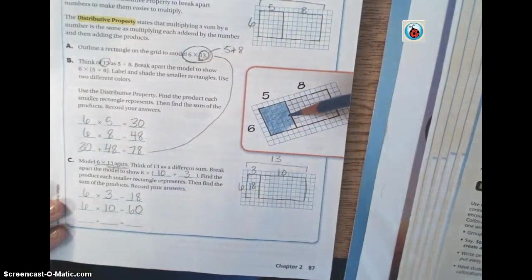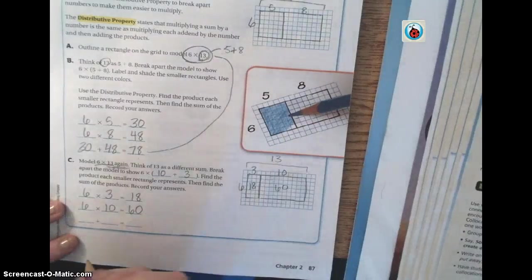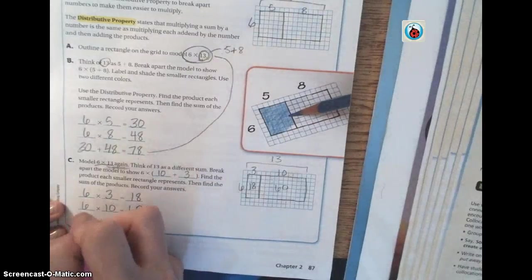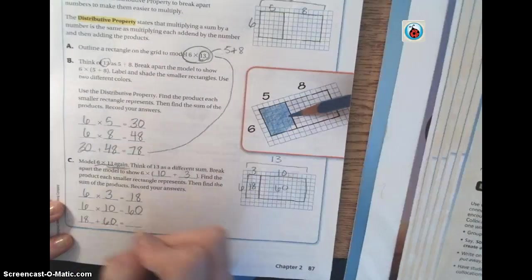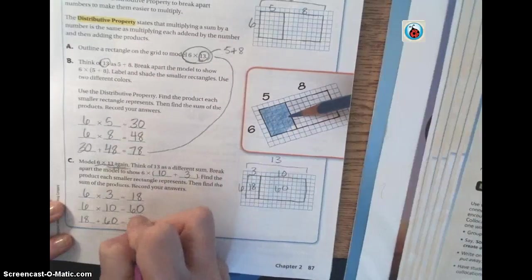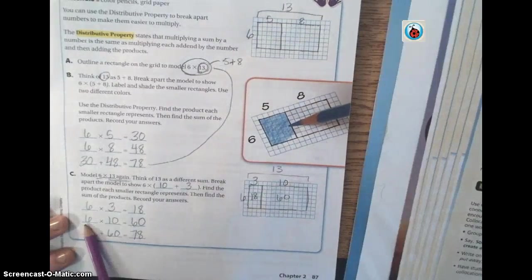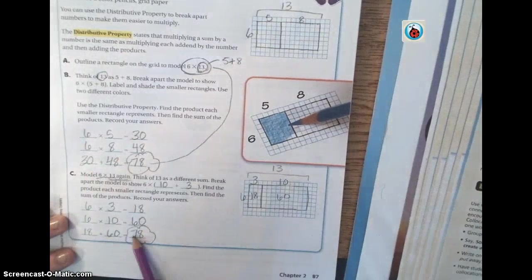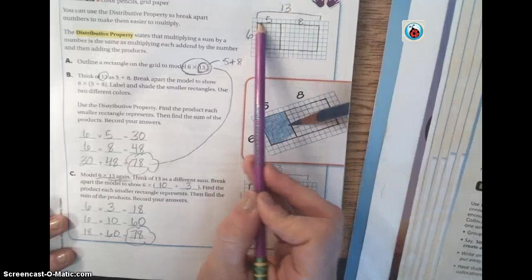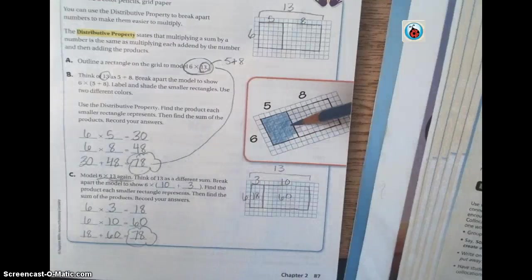Now, what two numbers are we going to add together to see how much 6 times 13 is? What two numbers are we going to add together, Brody? You're going to add 18 and 60. And 18 plus 60 is what, class? 78. Notice how it's the same exact number. So we got 78 here, 78 here. We broke it apart two different ways. Here we broke 13 into 5 and 8, and here we broke it into 3 and 10. Either way, we got the same answer, 78.